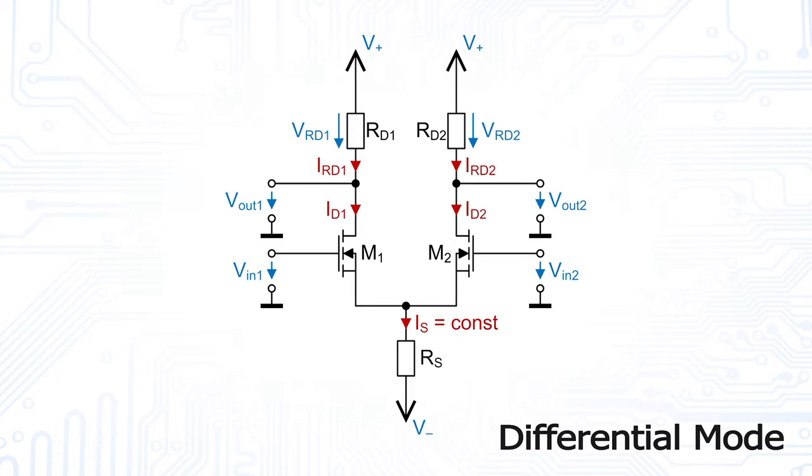In the next step we apply different voltages to the inputs, for example five volts to input one and zero volts to input two. We call this differential mode voltage. Since the voltage at input one is larger than the voltage applied to input two, the current through the left half of the circuit increases drastically.